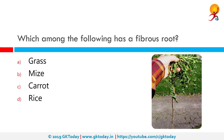Which among the following has a fibrous root? The correct answer is grass. A fibrous root system does not penetrate deeply into the soil but rather creates a thick network of roots that are good at holding the soil together. Many types of grasses have fibrous roots, including plants related to grass such as corn.